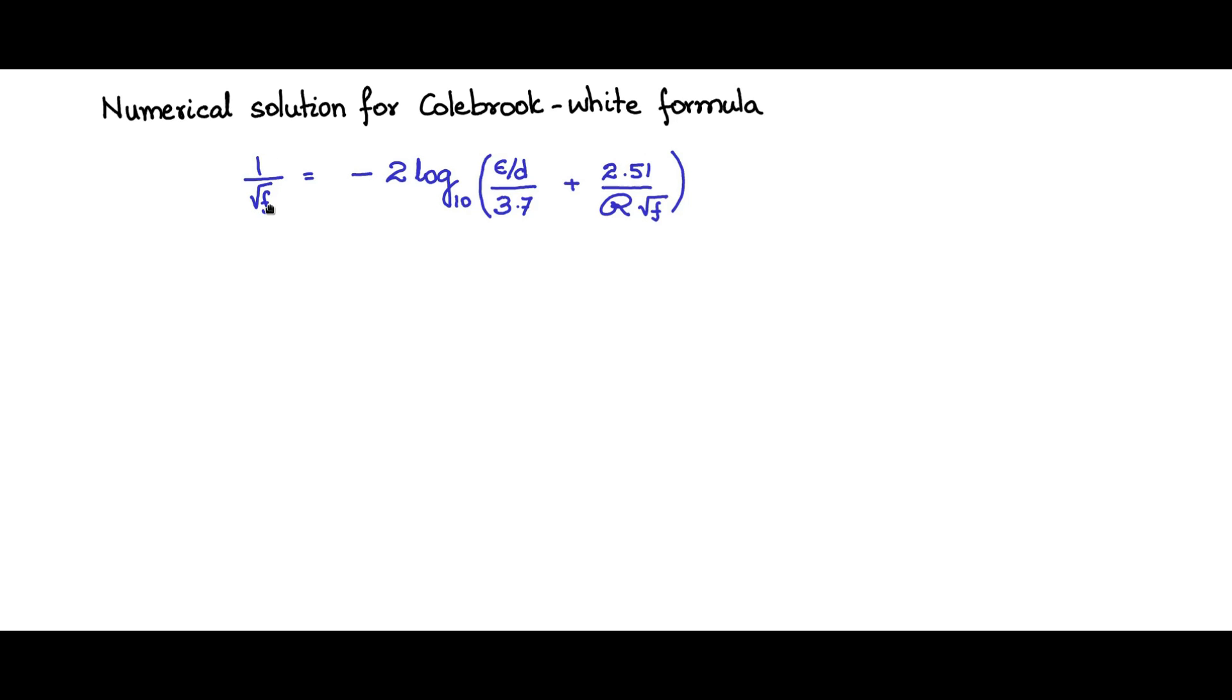Now, 1 by root of f, let us replace it with one symbol. Epsilon by d, roughness ratio by 3.7, we will replace it with one more symbol. 2.51 by Reynolds number, we will replace it with one symbol.